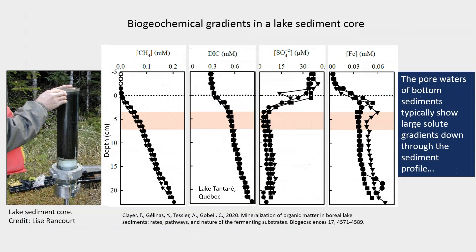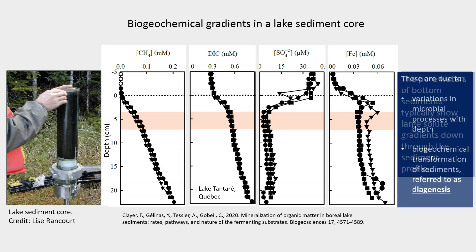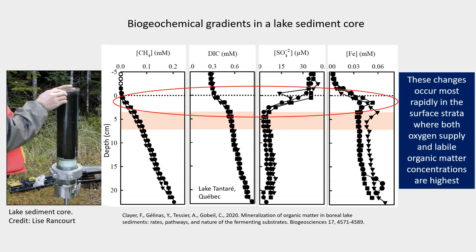The pore waters of bottom sediments typically show large solute gradients down through the sediment profile. These are due to variations in microbial processes with depth and the biogeochemical transformation of sediments referred to as diagenesis. These changes occur most rapidly in the surface strata, where both oxygen supply and labile organic matter concentrations are highest.